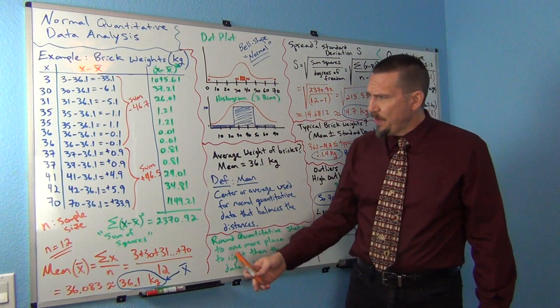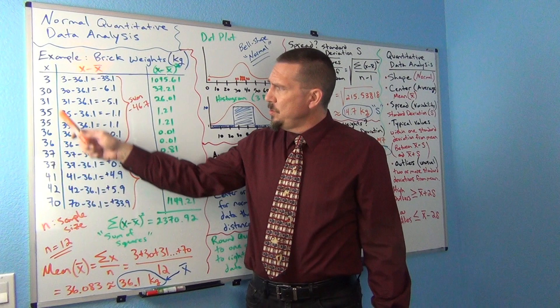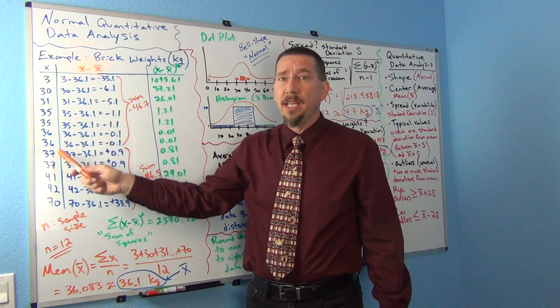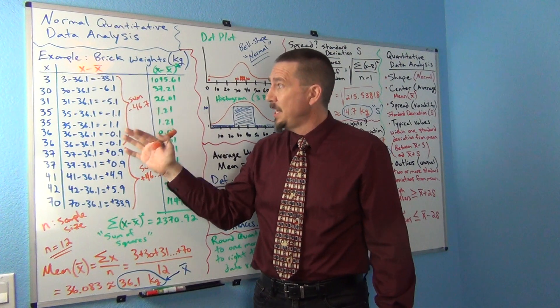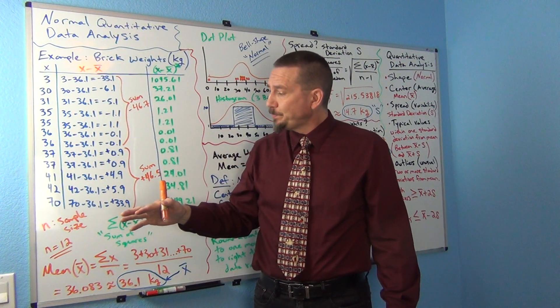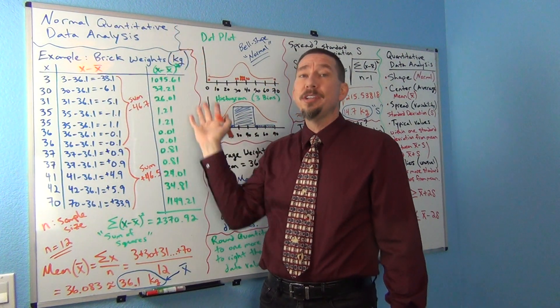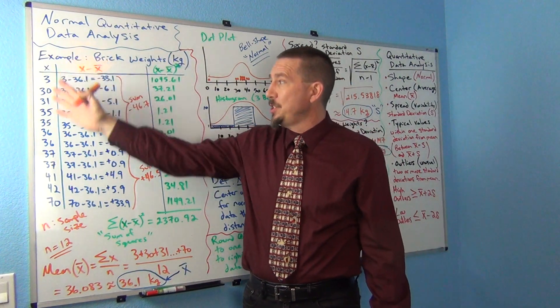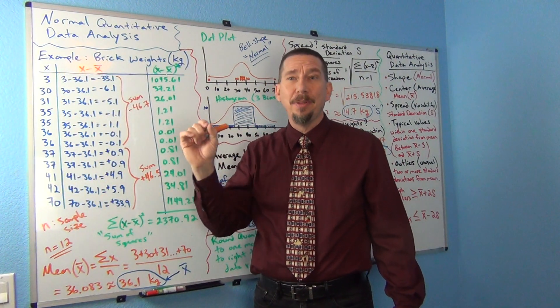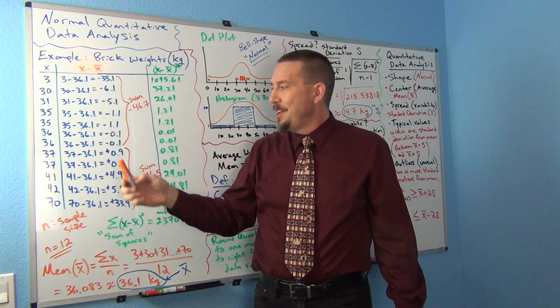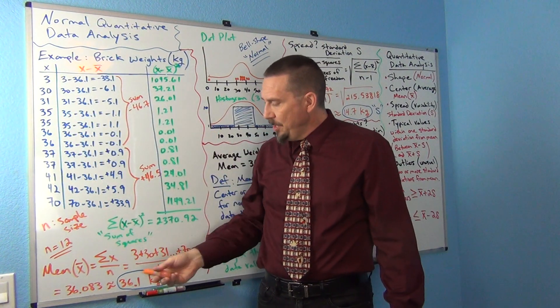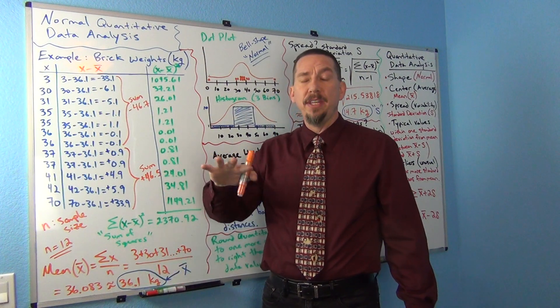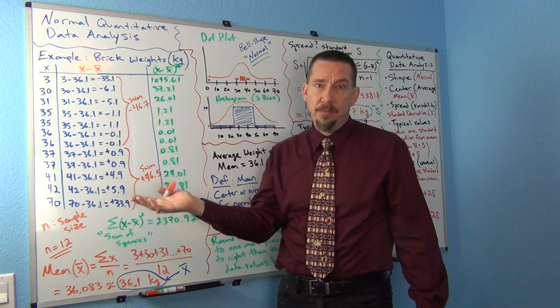So if I look at the original data values, they all end in the ones place. There's no numbers to the right of the decimal. There's zero numbers to the right of the decimal. So what you do is you go one more place value to the right than your original data. So since these numbers have zero numbers to the right of the decimal, my statistic I calculate from this data would probably be rounded to having one number to the right of the decimal. In other words, one more place value than the original data has.